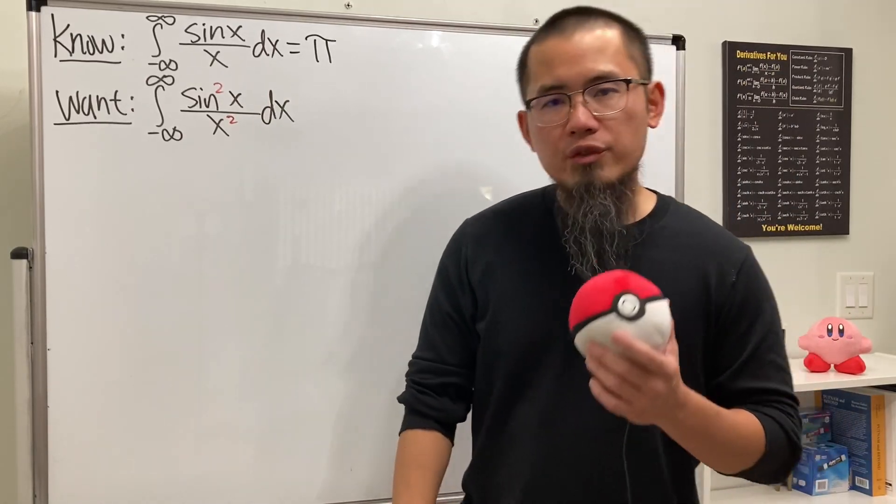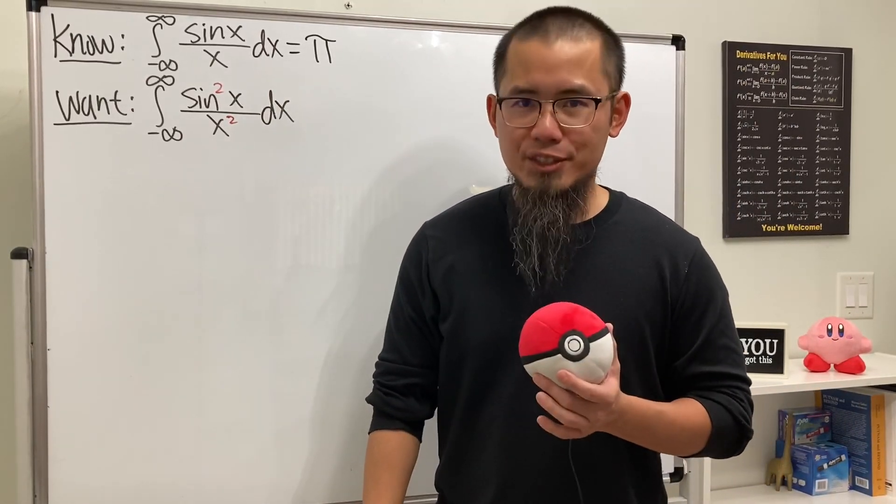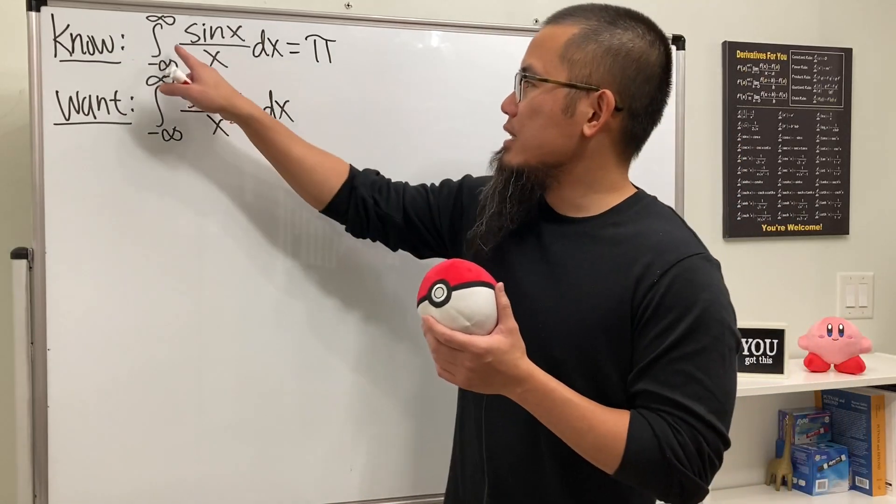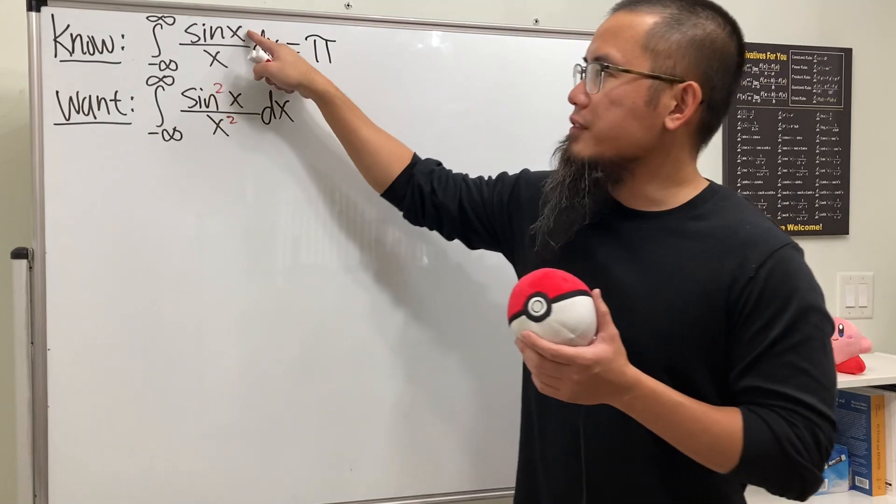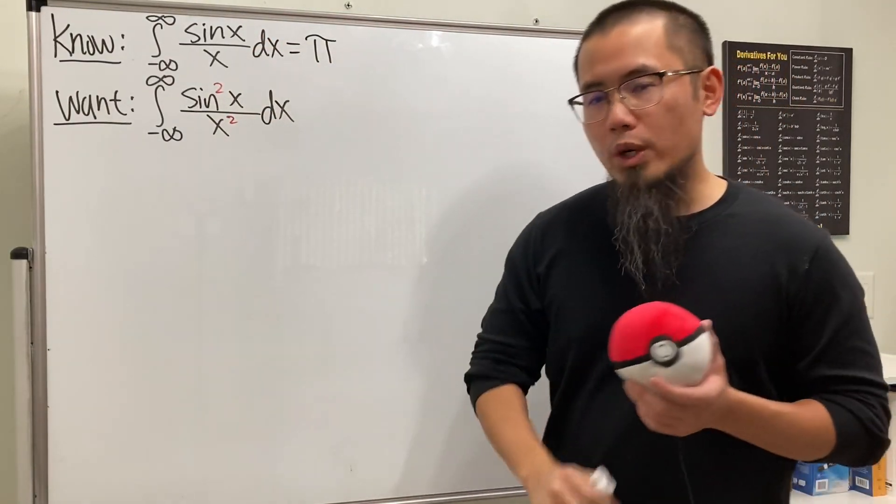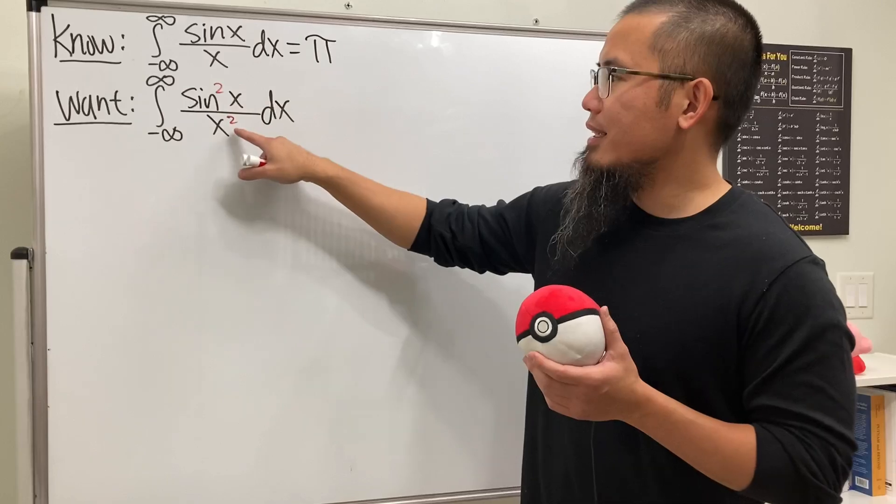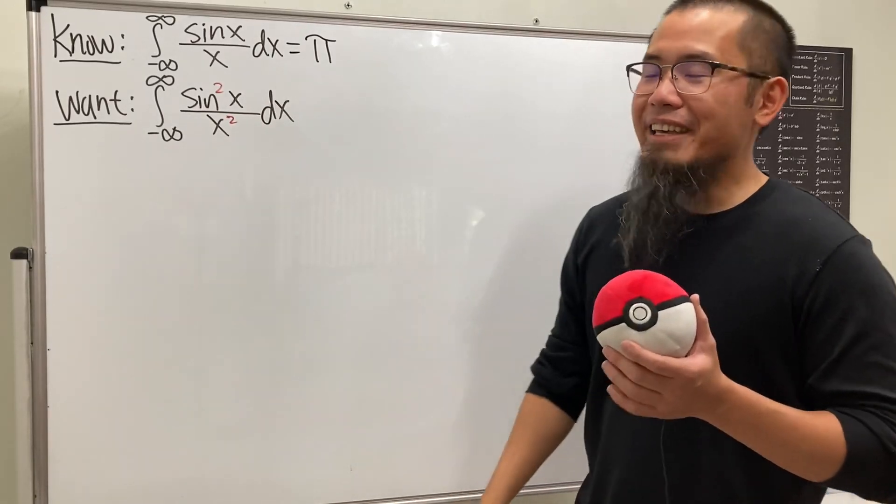I would say this is a pretty decent question for calculus 2 students who want to have a challenge. Check this out. Suppose we know the improper integral going from negative infinity to positive infinity of sine x over x is equal to π. We would like to know what if we square this and square that.